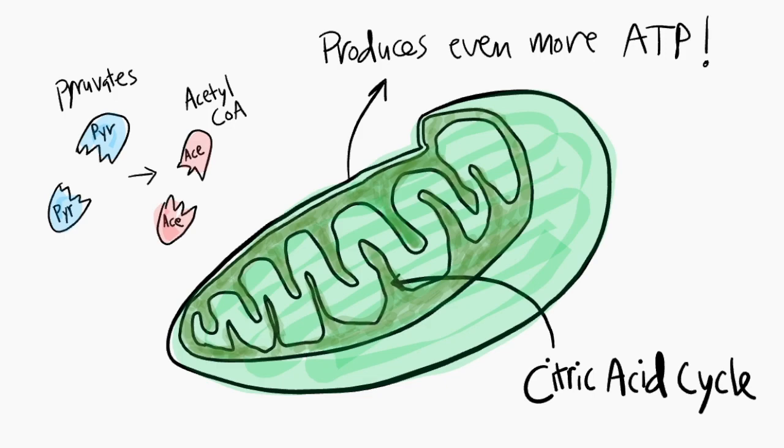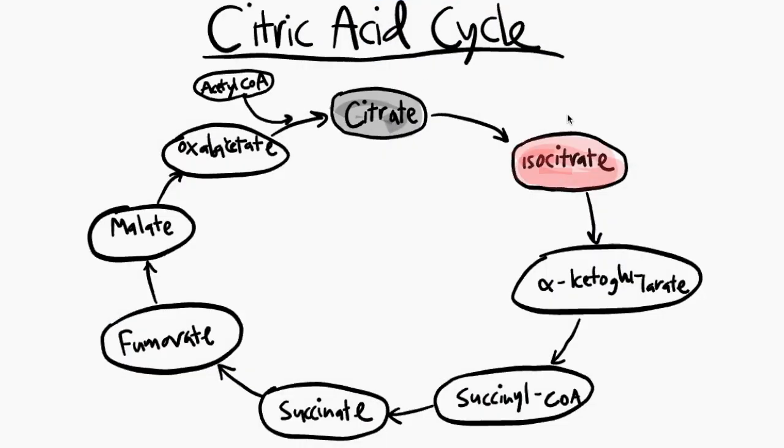Pyruvate enters the citric acid cycle starting as what we call acetyl-CoA. The process will continue to break down acetyl-CoA leaving behind carbon dioxide, ATP, hydrogens, and electrons.